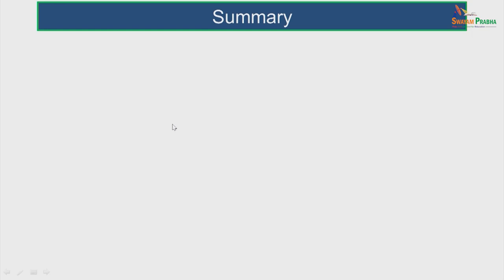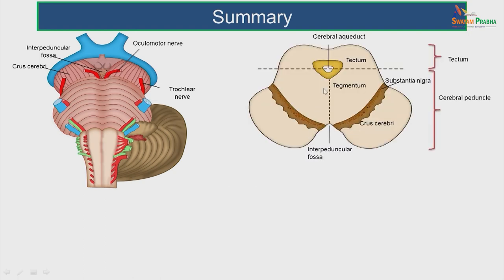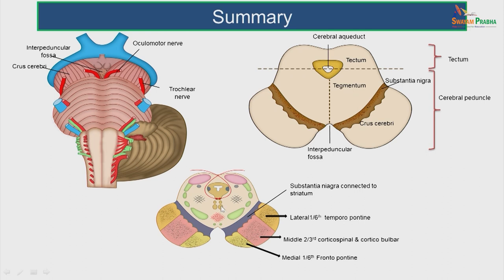To summarize so far: the midbrain has a dorsal and ventral surface and connects the forebrain and hindbrain. It forms the posterolateral boundary of the interpeduncular fossa. The oculomotor nerve emerges from the medial aspect and the trochlear nerve from the lateral aspect. In the cut section from anterior to posterior: crus cerebrae, substantia nigra, tegmentum, and tectum; the cavity is the cerebral aqueduct. In the crus cerebrae: lateral one-sixth is temporopontine, middle two-thirds is corticospinal and corticobulbar, medial one-sixth is frontopontine fibers.